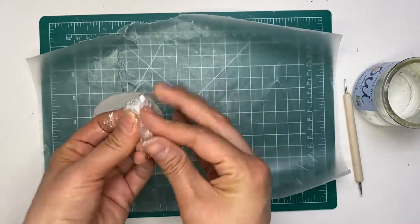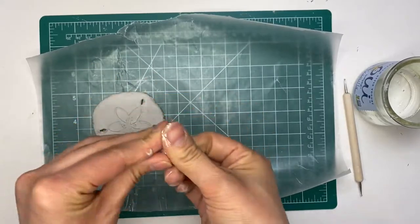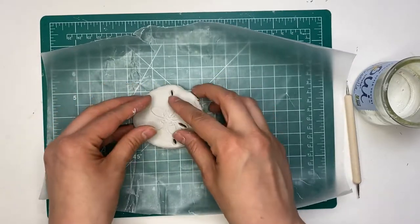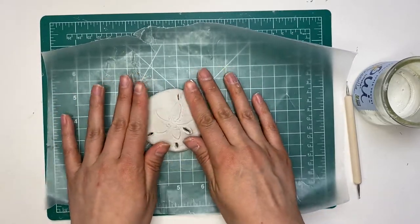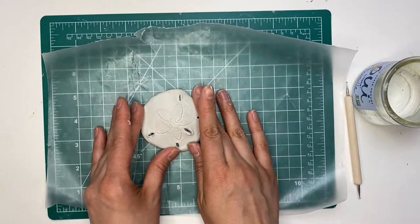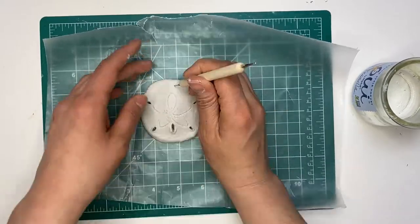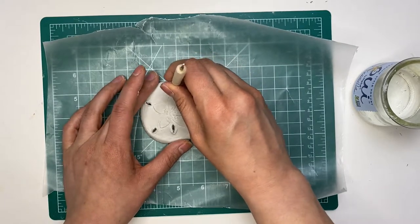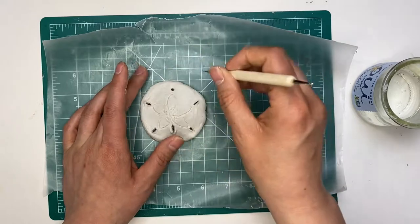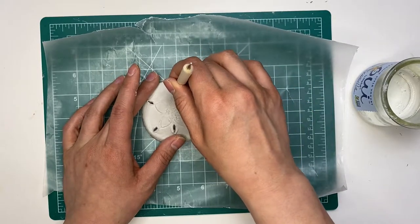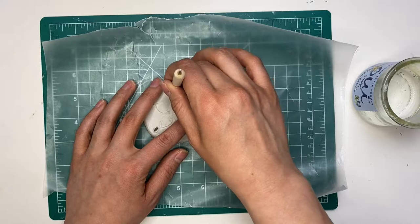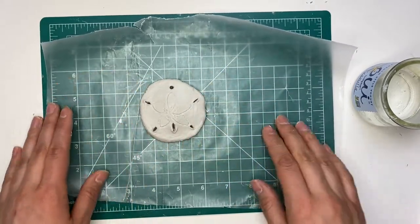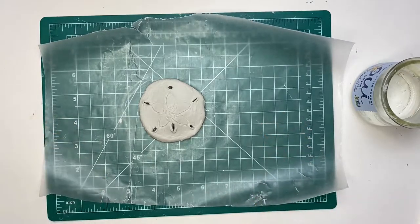Once I was done making my sand dollar, I placed it on top of some wax paper and then I grabbed some plastic wrap and bunched it up into a little ball and then I placed my sand dollar on top of it to give it that bend that sand dollars usually have. Also don't forget to create a little hole on the top of your sand dollar—we're going to need that hole and the hole we created previously at the bottom to hang our sand dollars. And then again, this will take about 48 hours to completely dry and make sure to flip it over so that everything dries evenly.